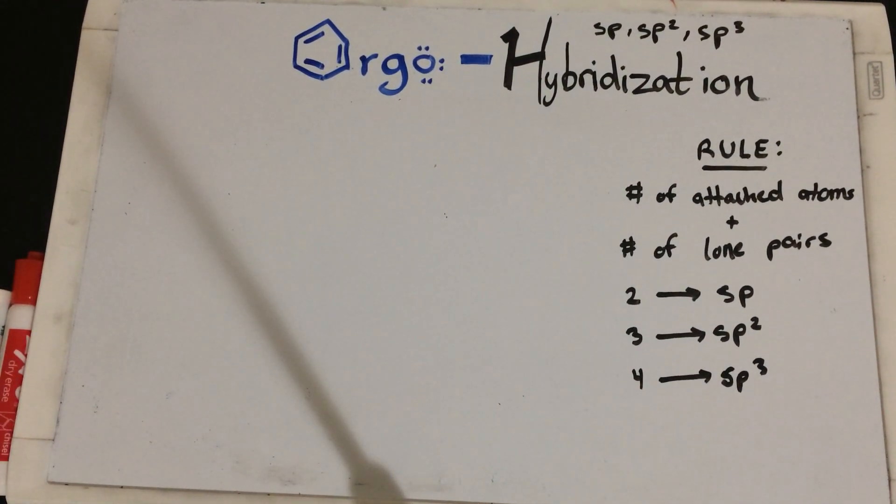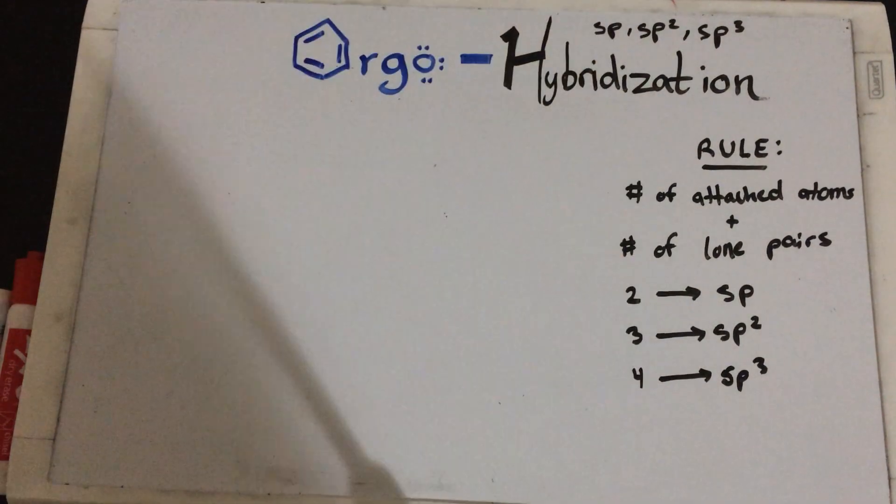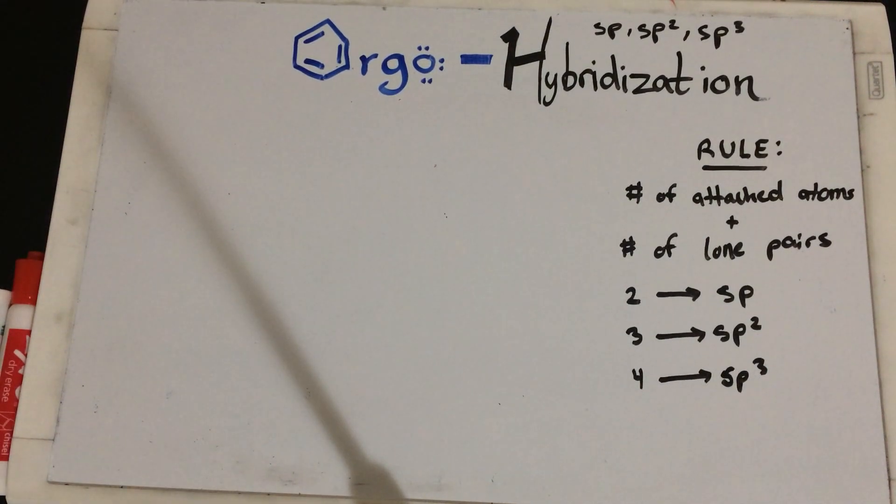Hey, what's up YouTube? This is Iconic here with Organic Chemistry Made Simple and in this video, we're going to talk about hybridization. So basically, what is hybridization? It's just a way to rationalize how binding works between different atoms.